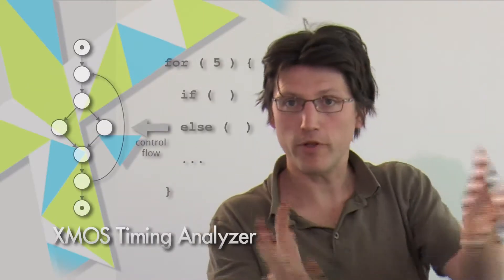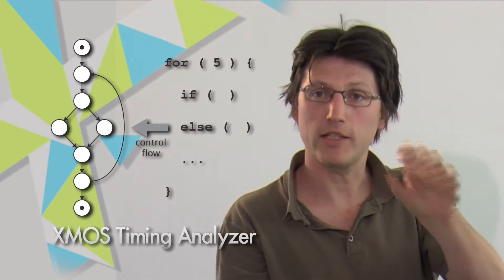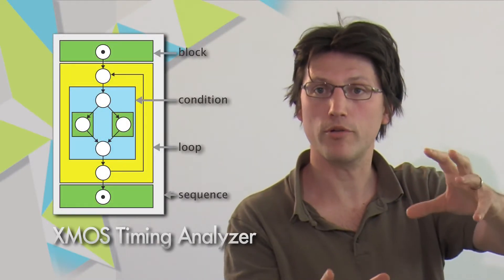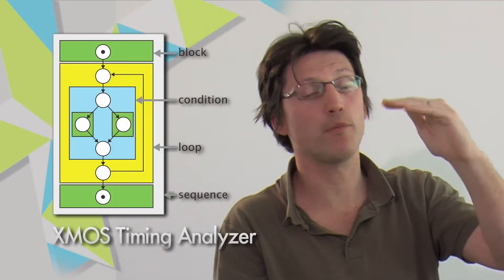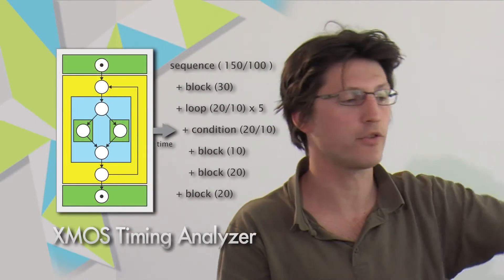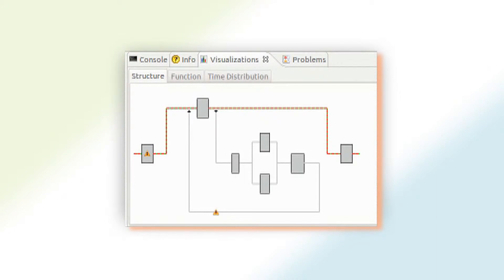The way this works is: first of all, it can construct a control flow graph based off the binary, and then it will use pattern matching techniques on this control flow graph to build up a structural hierarchy representation of what the program is. We can then annotate that hierarchy with the best and worst-case times at each level of the tree. This hierarchy can then be displayed in various means — as a tree or in some other visual way.